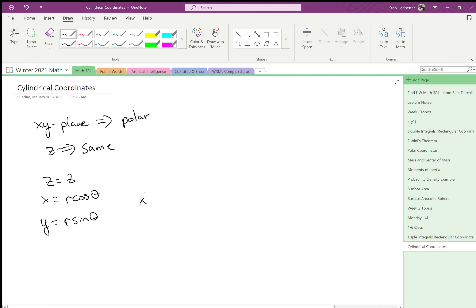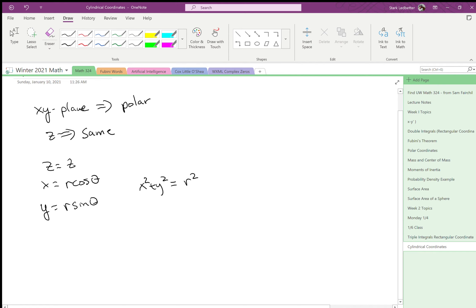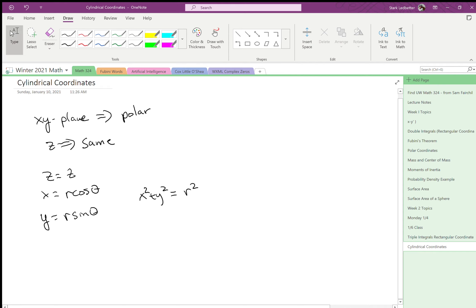And then a couple extra conversions that might be useful that you already know are x squared plus y squared equals z squared. And if you had to solve for theta, probably the best thing is that tan theta is y over x.